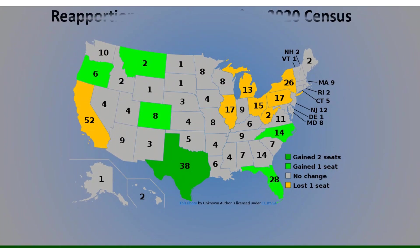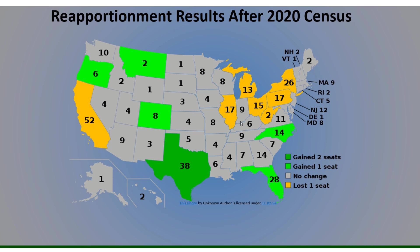Let me show you the reapportionment results after the 2020 census, the most recent one. Looking at the map, gray states are those whose number of seats in the U.S. House never changed after reapportionment. States in yellow are those whose numbers decreased — either they're shrinking or not growing as fast as other states. California actually lost a seat. States in green like Colorado, Montana, Oregon, North Carolina, and Florida all gained one seat in the U.S. House after the latest reapportionment.